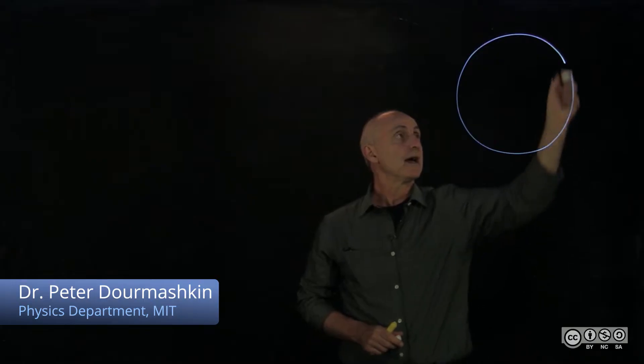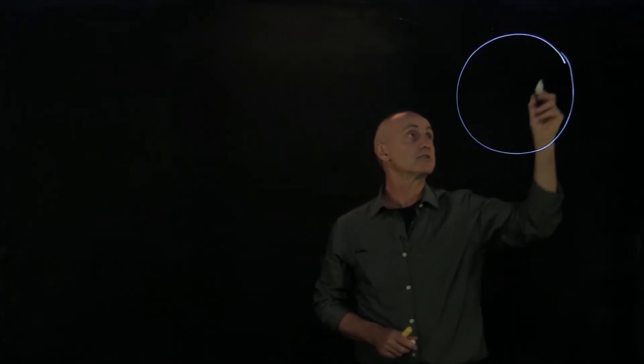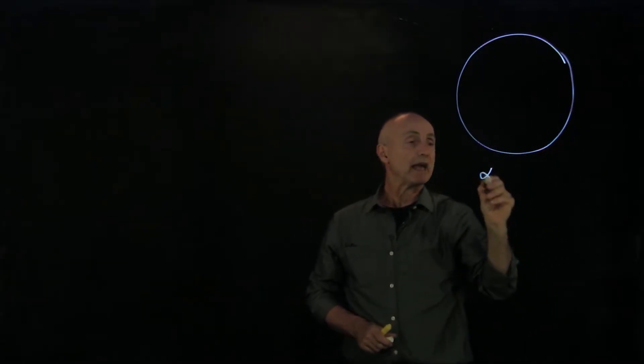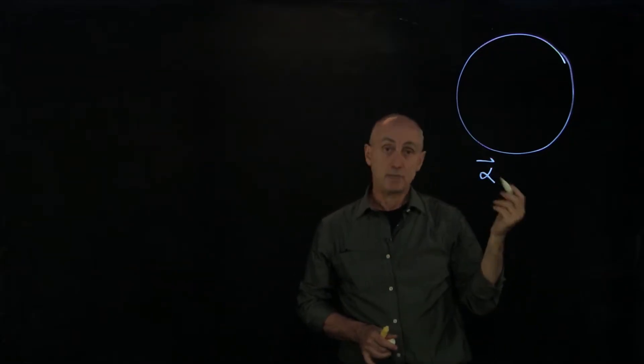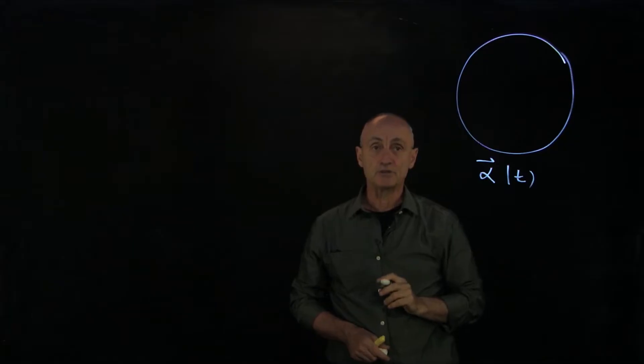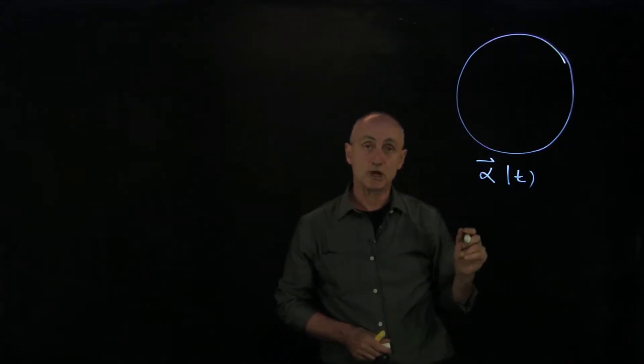Suppose we have a rigid body rotating about a fixed axis, and we know that the angular acceleration alpha is given. It may be a function of time, and we'd like to find from this the angular velocity and how much angle has rotated in some time interval.